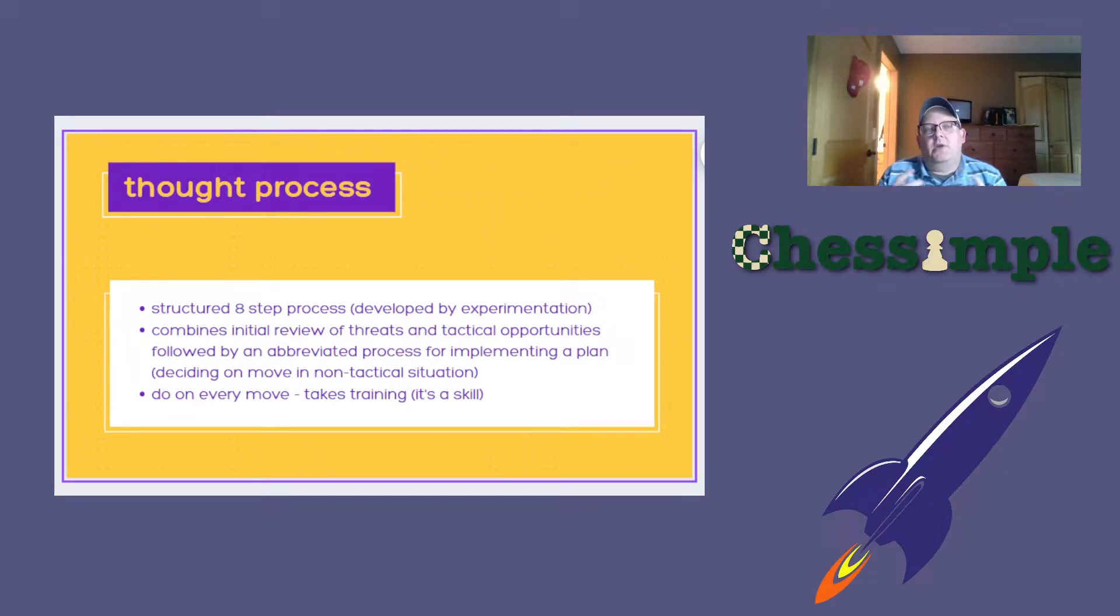Michael had a structured eight-step process that he used on every chess move. Every time an opponent made a move, he had a process that he went through. He developed this by a process of experimentation, experimenting with different processes until he found the one that worked best for him. Basically, he combines an initial review of the opponent's move, looking to see if it's threatening anything.